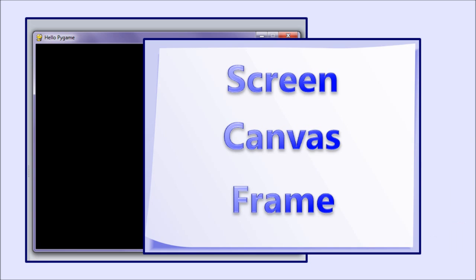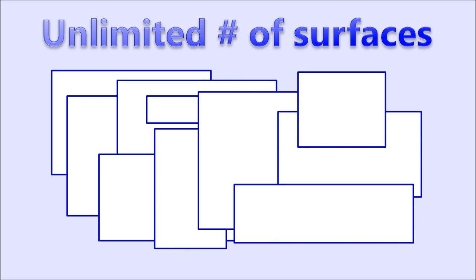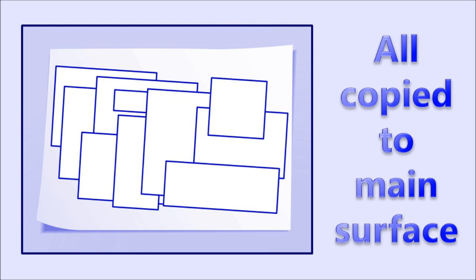Screen, frame, and canvas are just synonyms we've used to refer to a surface that is the same size as our display window. You can use whatever word you like, but you need one main surface that is the same size as your display. You can have as many surfaces as you want, you can draw on any of them, and they can stack on top of each other. But eventually, all your surfaces have to be copied to your main surface.